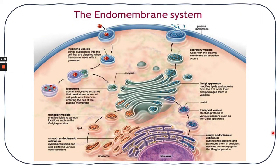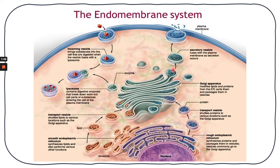Let's take a look at how the endomembrane system works. The rough endoplasmic reticulum produces proteins, and the smooth endoplasmic reticulum synthesizes lipids. Proteins from the rough ER and lipids from the smooth ER are carried in transport vesicles to the Golgi apparatus. In the Golgi, products are modified by sorting and packaging them into secretory vesicles, which then travel to various cell destinations. Secretory vesicles carry products to the plasma membrane, where exocytosis or secretion occurs.